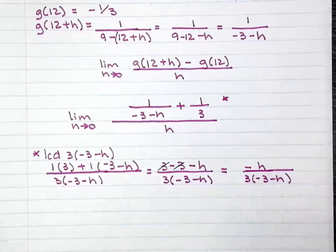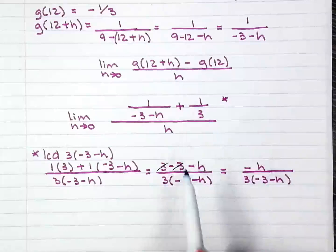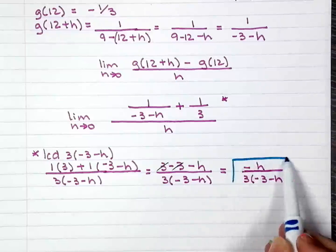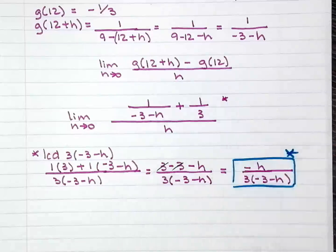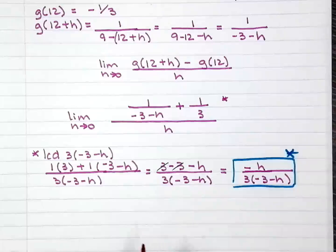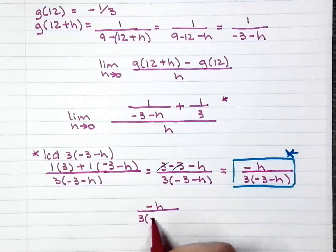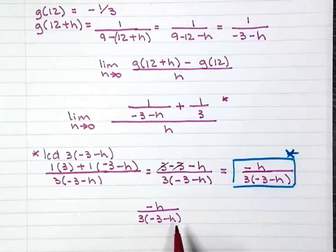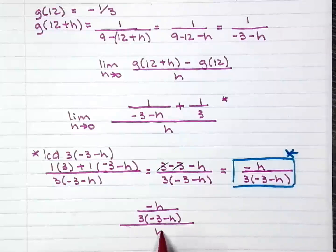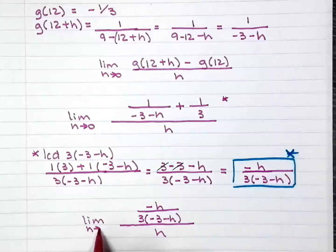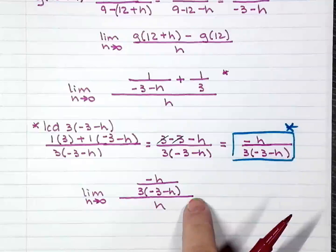So all this work that we did in this cute little box is this part right here. It's not the answer, okay? I'm just boxing it so you know this is where it was. Bring it all back together. We have -h over our LCD. So we are replacing this with this over h. And we are still finding the limit as h approaches 0. So now when you divide, we are going to multiply by the reciprocal.